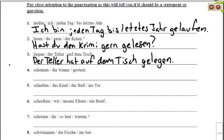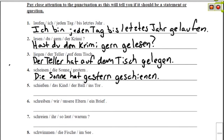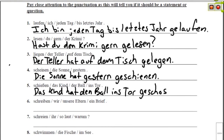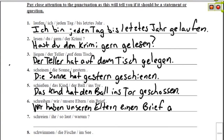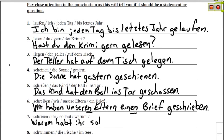Scheinen with a form of Haben, stated as: Die Sonne hat gestern geschienen. Schießen as a statement: Das Kind hat den Ball ins Tor geschossen — The child shot the ball into the goal. Another statement starting with Wir: Wir haben unseren Eltern einen Brief geschrieben. Notice we added -en to unser for dative plural, and einen for accusative masculine. The next one is a question starting with warum: Warum habt ihr so laut geschrien? — Why did you yell so loud?